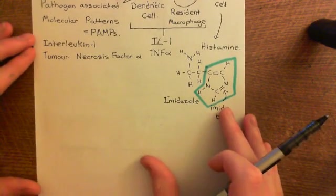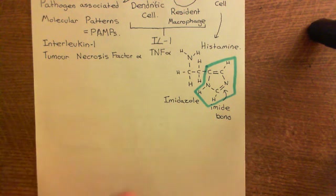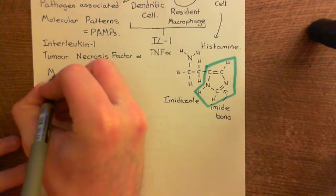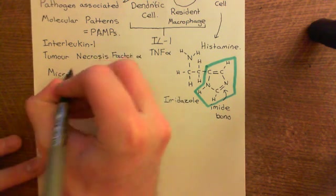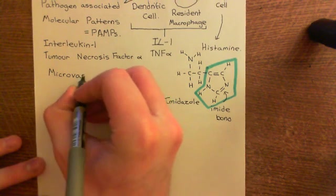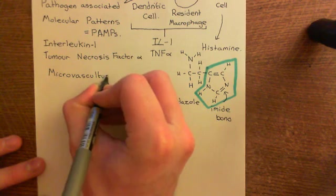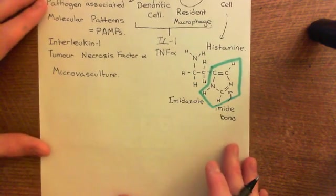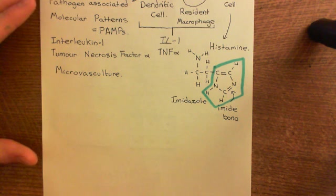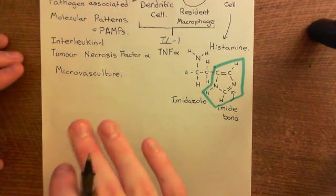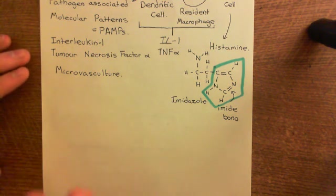Let's briefly talk about the types of microvasculature that you have in a tissue. Microvasculature means very small blood vessels. When people talk about the macrovasculature, they mean the big vasculature — arteries, veins, the things you have to learn the names of in anatomy. The microvasculature you don't have to learn the names of in anatomy, because you can't see them.